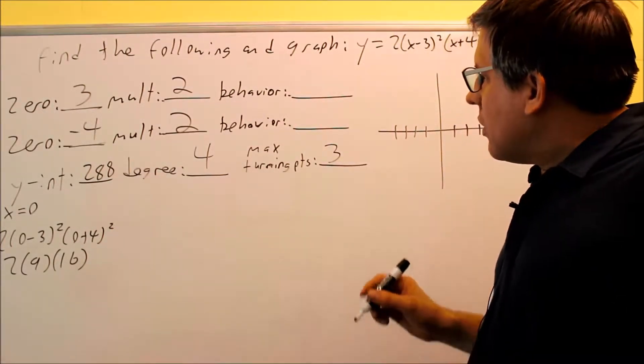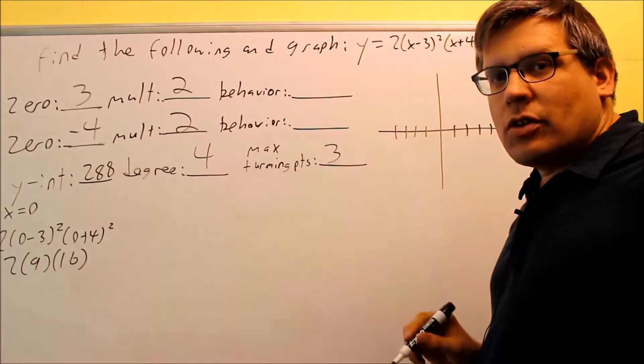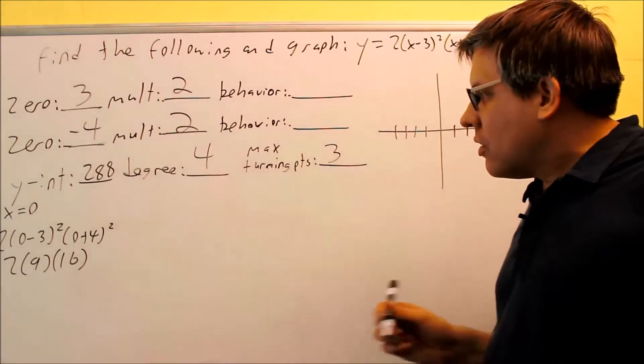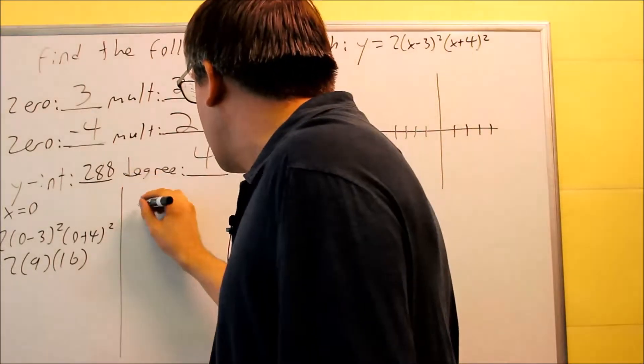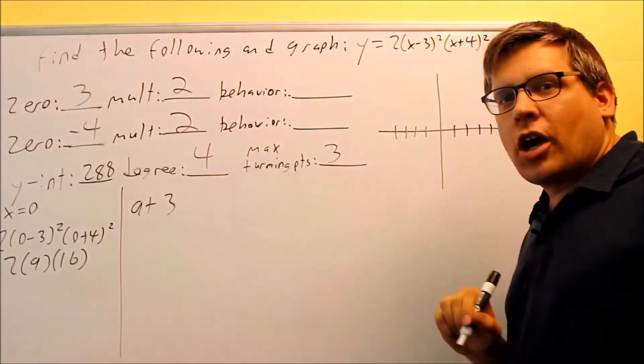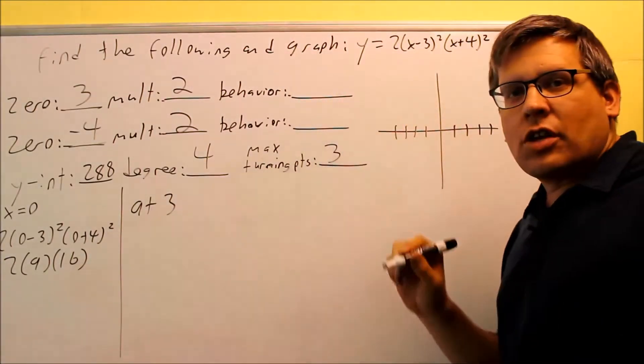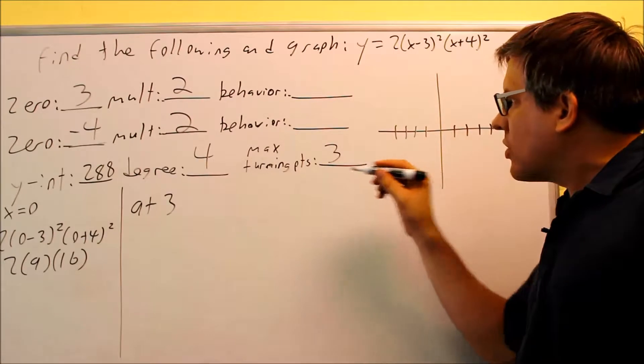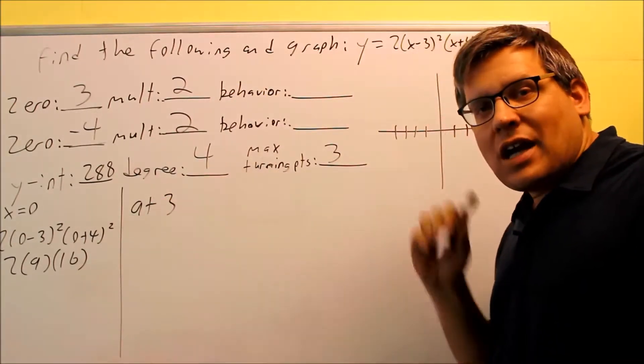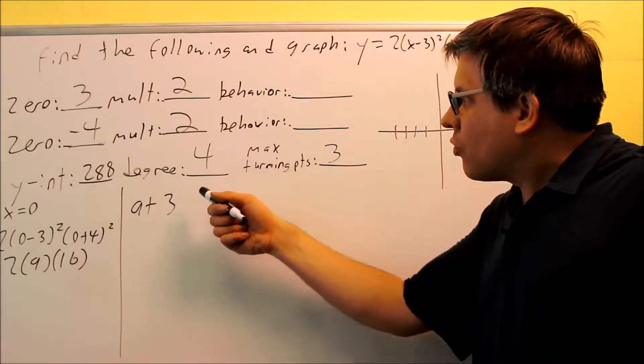Next, I want to find my behaviors. The behaviors you're going to have at each one of the individual zeros. So I want to do that over here. So first of all, I'm going to do the behavior at 3. The behavior, again, is the equation that the graph resembles when it crosses the axis at that particular zero. So I want to find out what equation it looks like at 3.